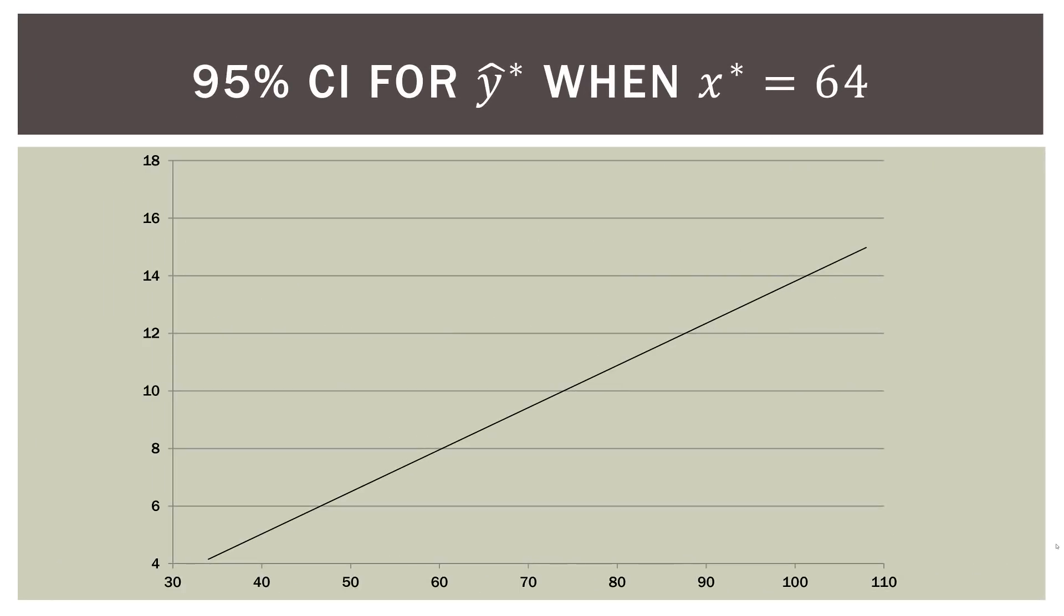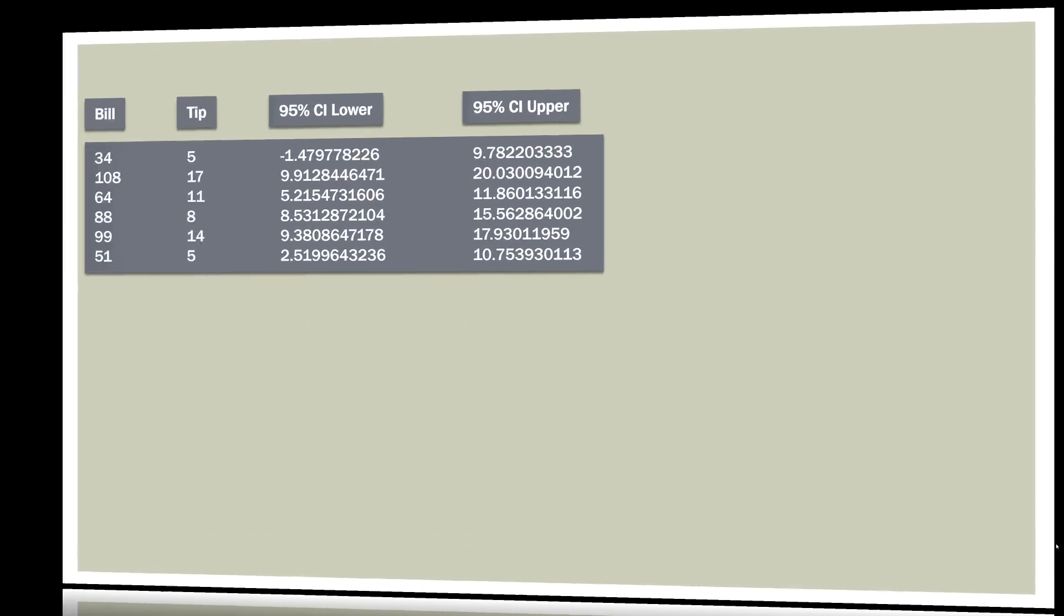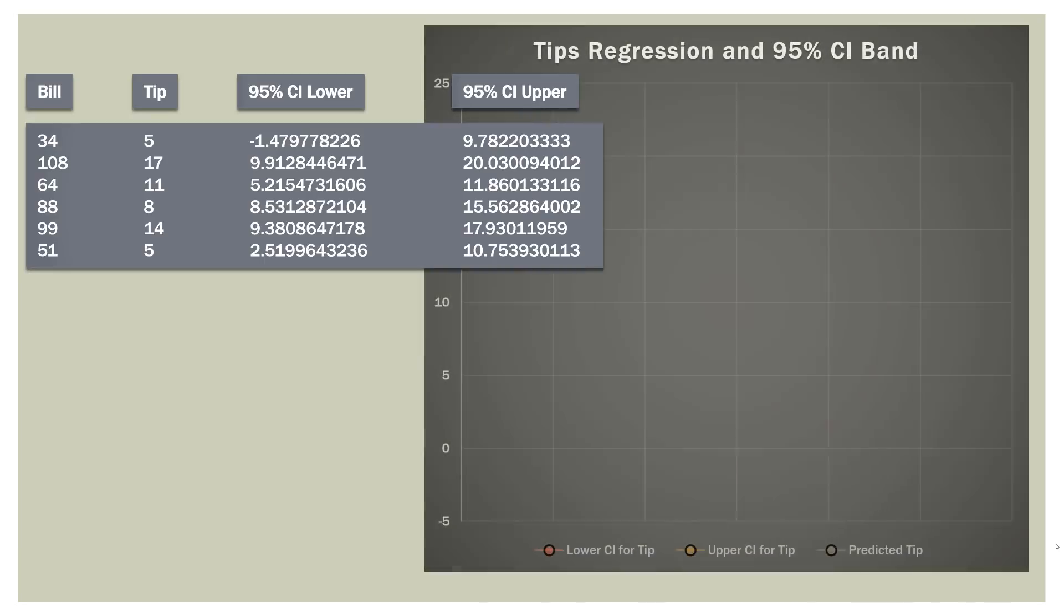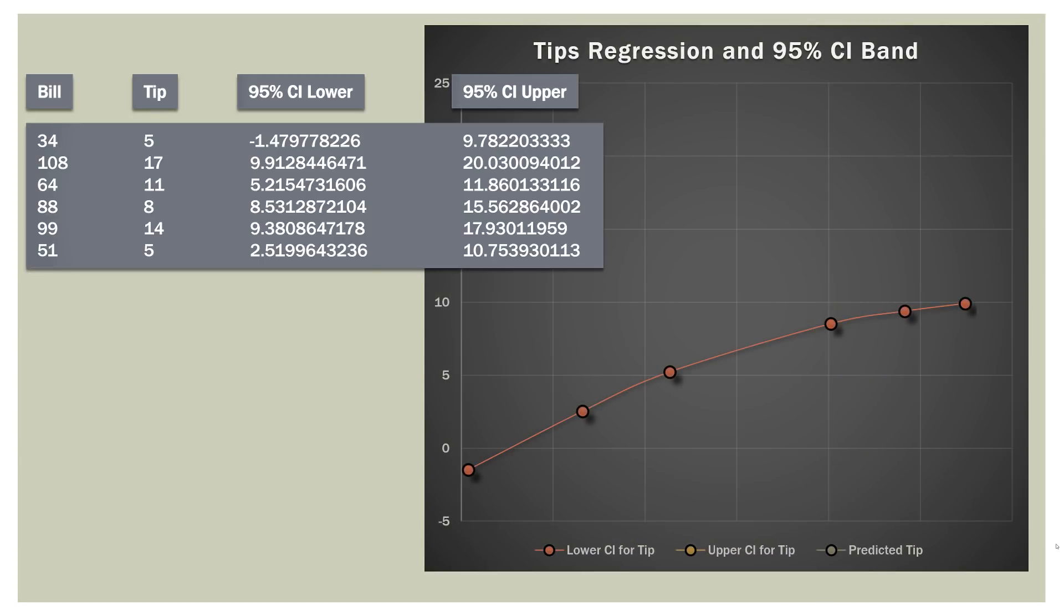Okay, so I think we're almost done here. Here is our interval for $64, right there. So here's the upper and lower of that interval. Now if we do that for all of our data, this is what we get.